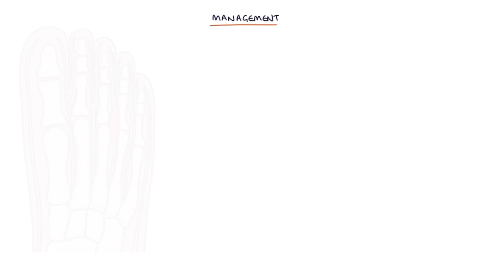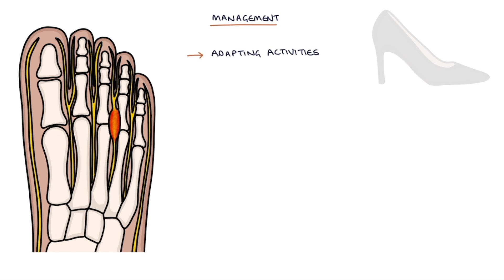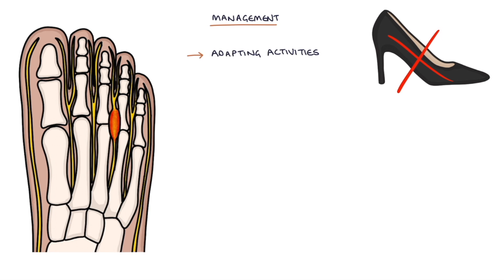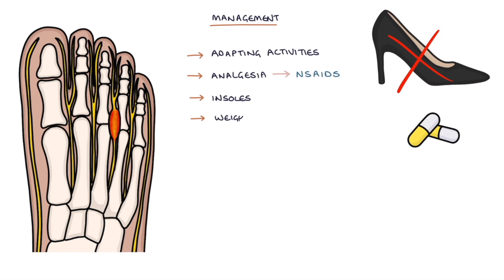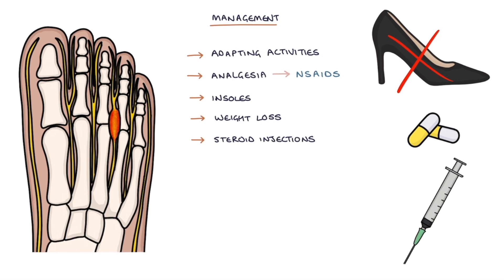Management options include adapting activity — for example avoiding high heels — analgesia with non-steroidal anti-inflammatory drugs if suitable, insoles, weight loss if appropriate. Steroid injections can be used, and there's also the option of radiofrequency ablation or surgery, which can involve excising or removing the neuroma.